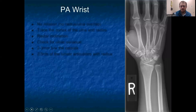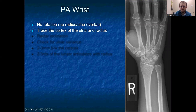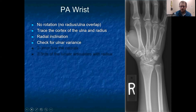Starting with the PA of the wrist: first, make sure there is no rotation so that it's a true PA. Look at the relationship of the radius and the ulna, tracing those cortices and making sure there is no overlap. Then look at the radial inclination — the normal tilt of the radius where the distal radius articular surface is tilted towards the ulnar side. Also check for ulnar variance, which is the relationship of the distal radius to the distal ulna — they are equal in length normally, but asymmetry can predispose to certain clinical issues.